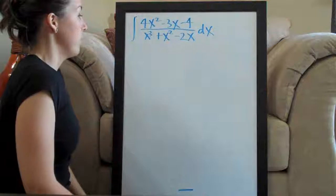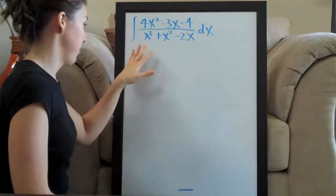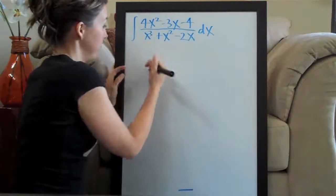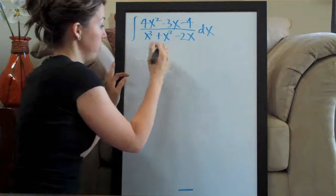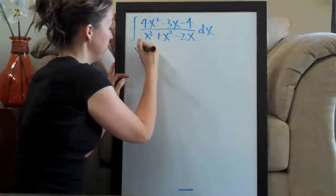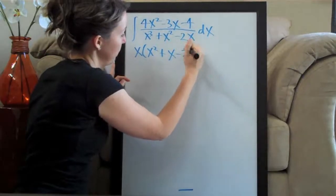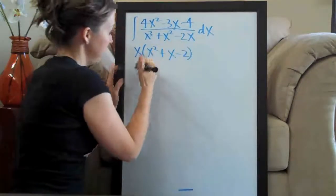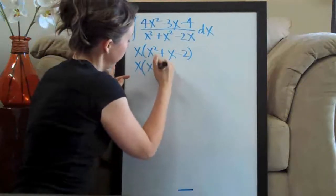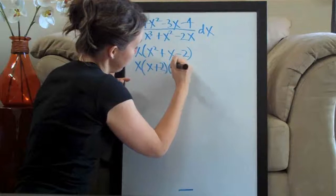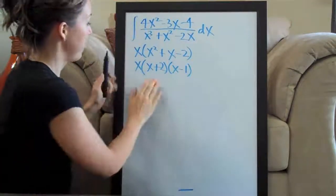The first thing we want to do, since it's partial fractions, is factor the denominator. Focusing on the denominator, I'm going to pull out an x, so that gives me x times (x squared plus x minus 2), and then you can factor this even further — it's going to be x times (x plus 2) times (x minus 1). So we've factored the denominator.